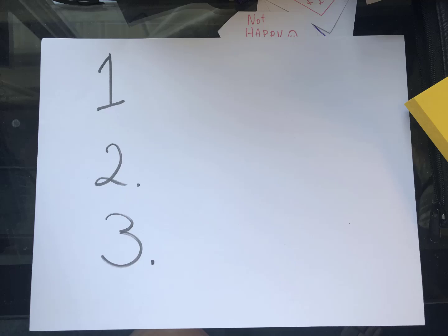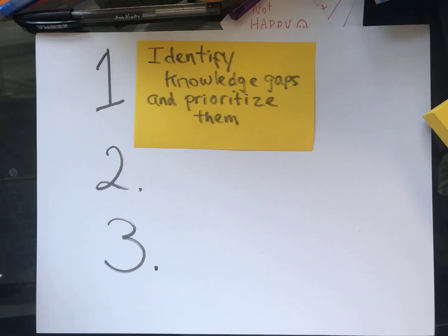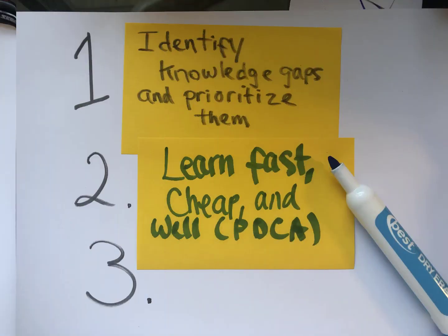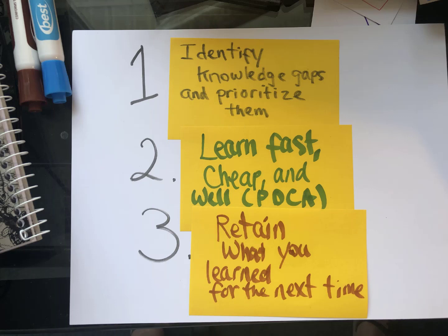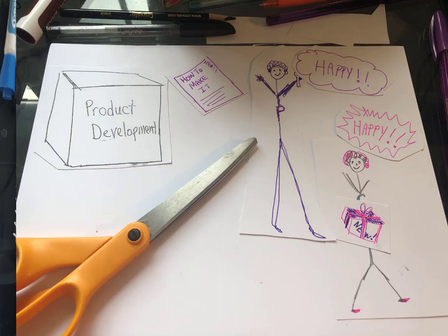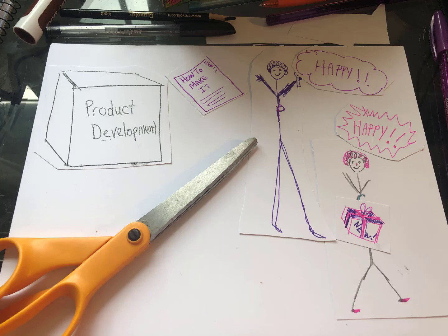We make knowledge flow with three steps. The first step is to identify knowledge gaps and prioritize them. Second, we need to learn first — cheap and well — and for that we use PDCA. Finally, we have to retain what we've learned for the next time. And that is how we end up with happy customers and a happy plant.